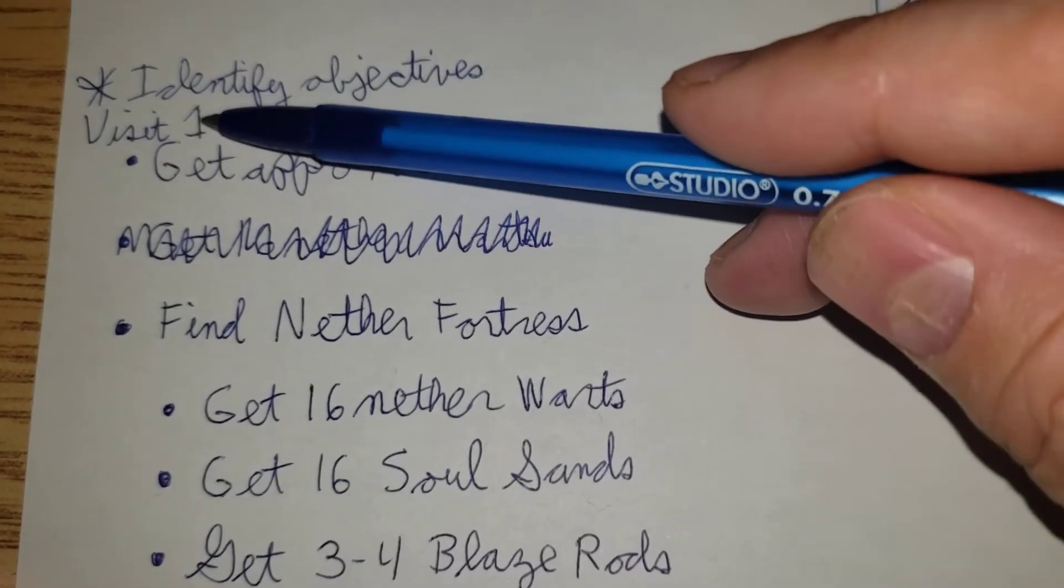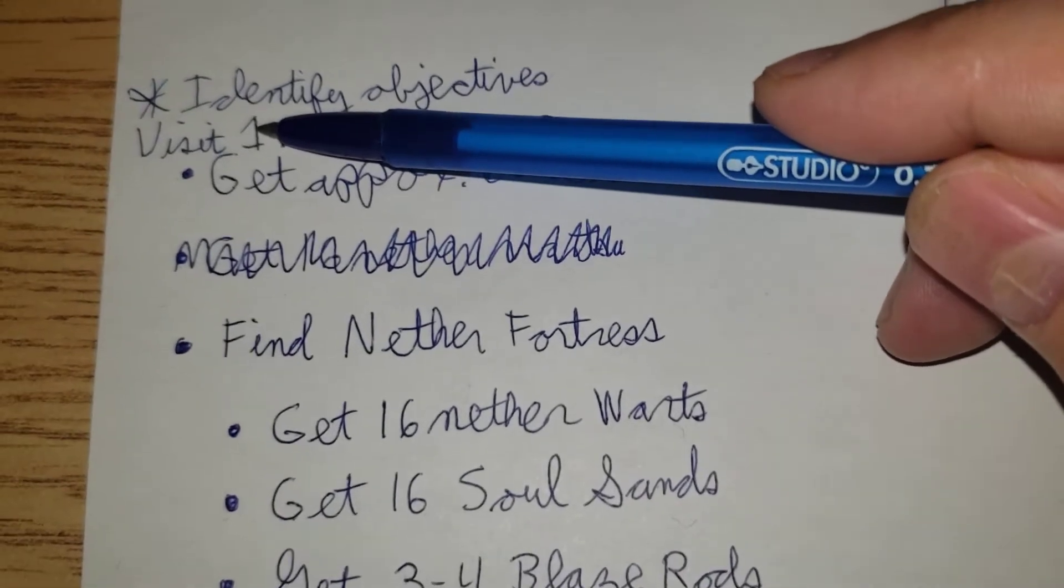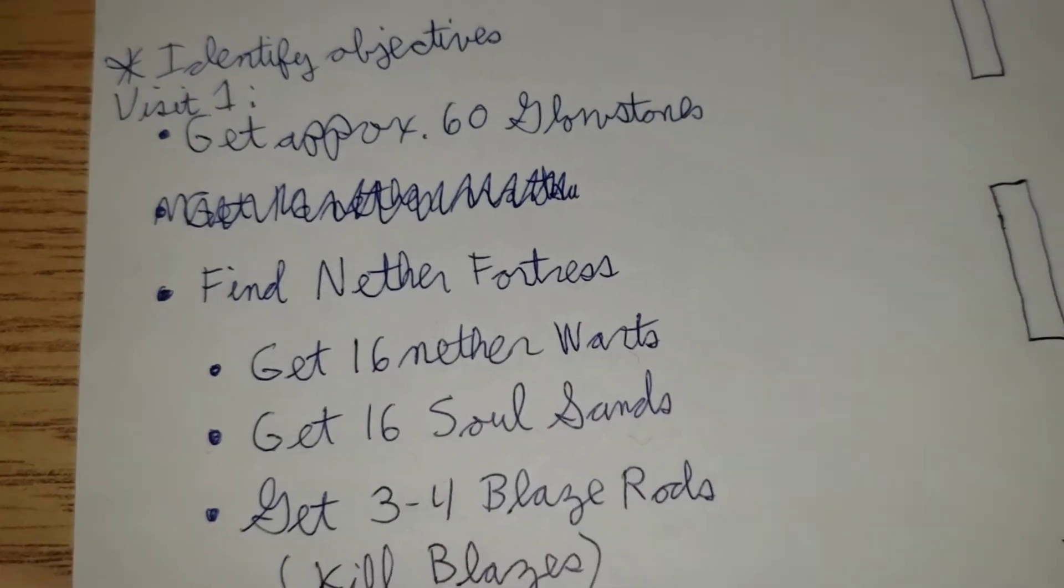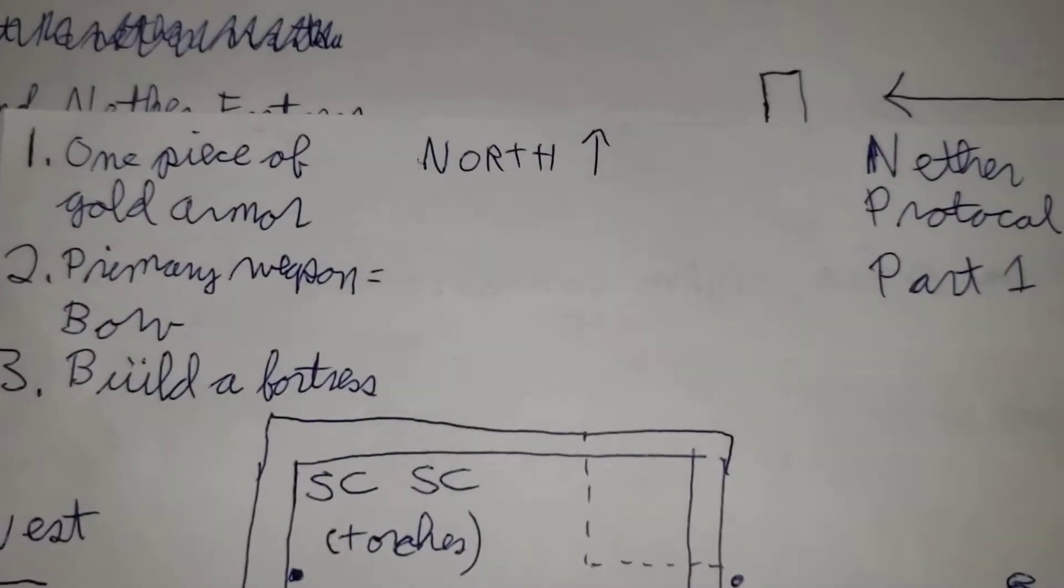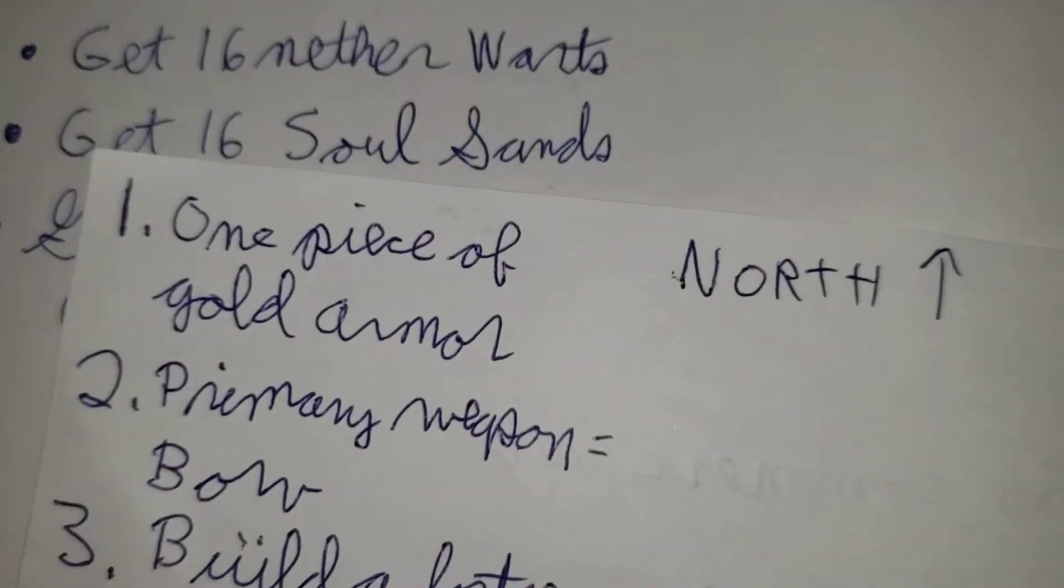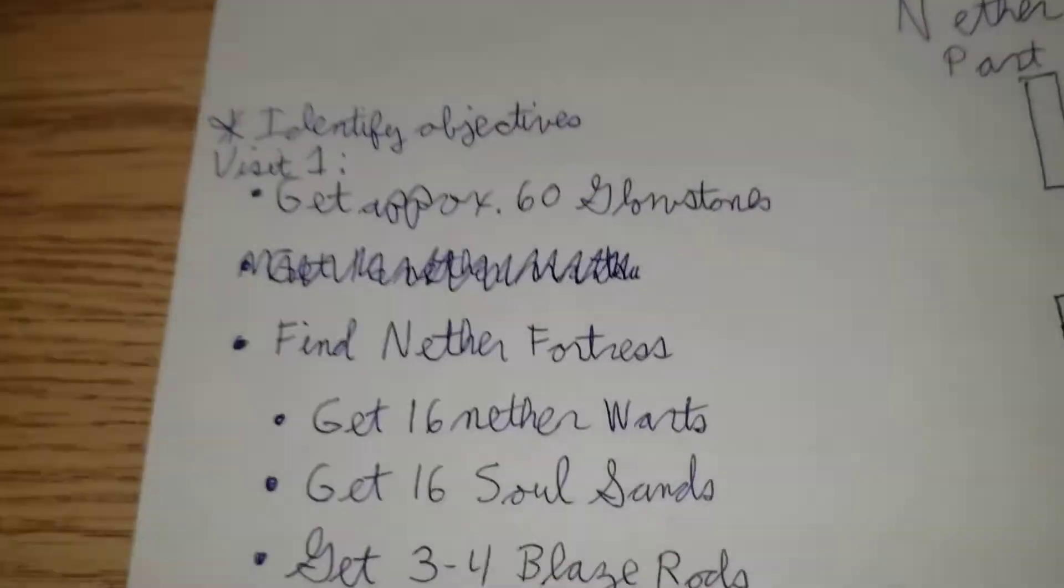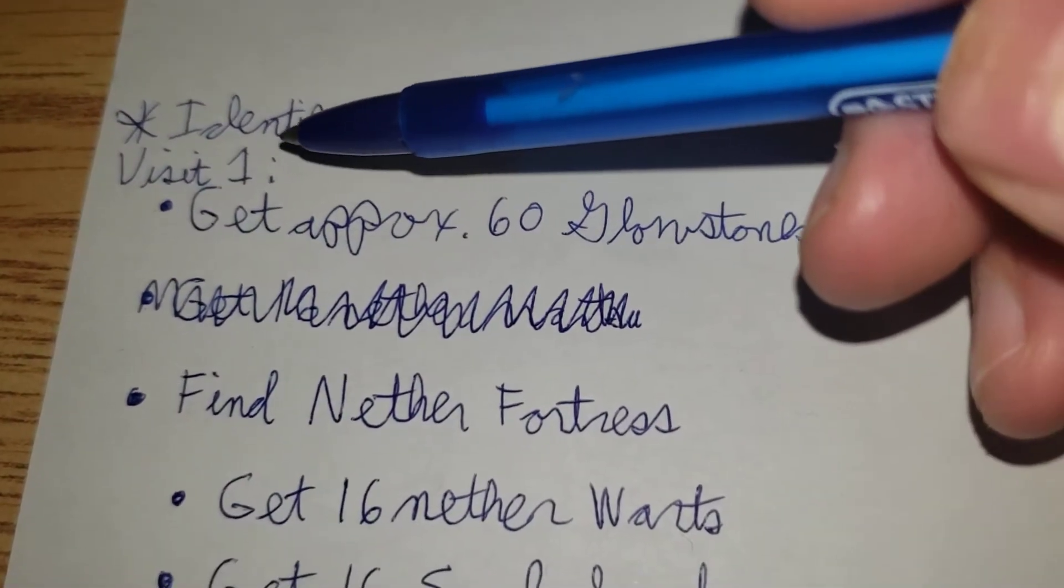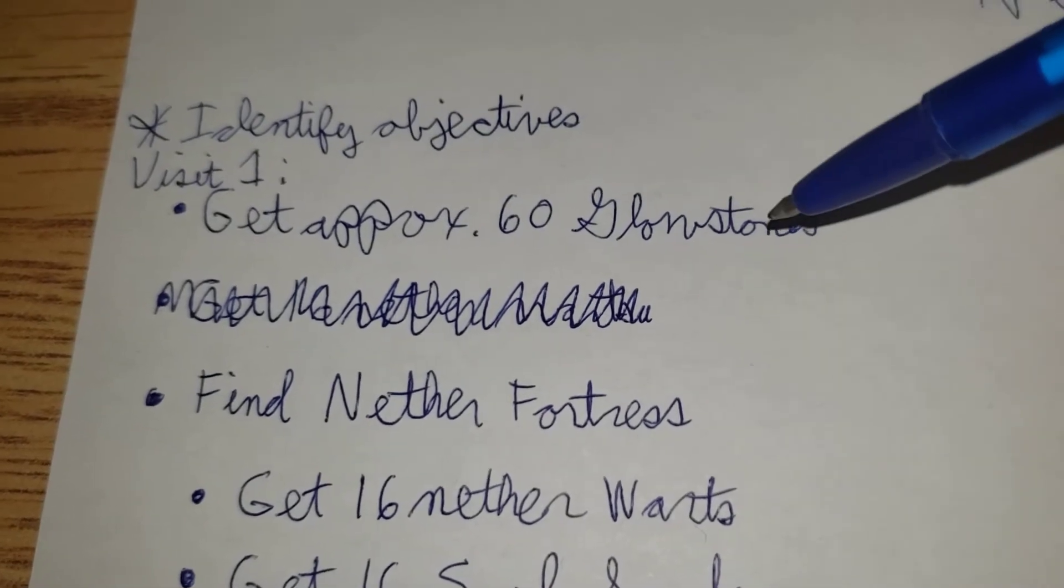So for your first visit, yeah, there's going to be a second visit. You will see why. For your first visit, well, of course, you're going to build the fortress and have a piece of gold on it. But also the specific objectives would be to get approximately 60 glowstones.